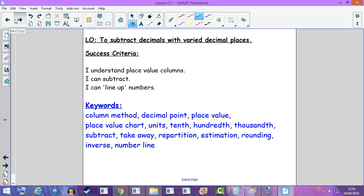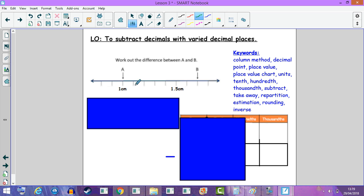So let's have a look at the first question. We're presented with a number line, and we have two points here: 1cm and 1.5cm. We have A as 1cm and B as a mystery number. What would help us to work out the difference is to find out what these little lines or divisions are worth.